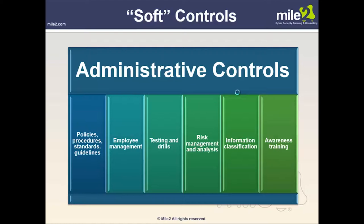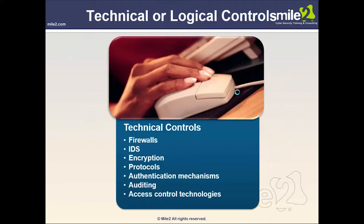Awareness training is another soft control that companies are doing more of, which is great for combating social engineering attacks. Technical and logical controls include firewalls, IDS, intrusion detection systems, encryption protocols, authentication mechanisms such as Kerberos, auditing processes, and access control technologies — all covered in upcoming modules.